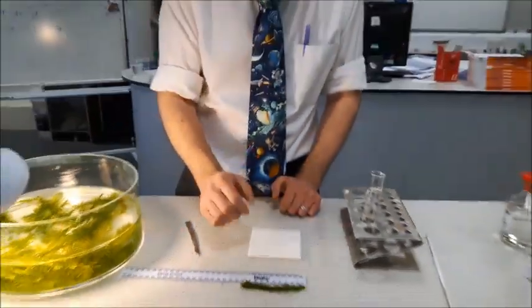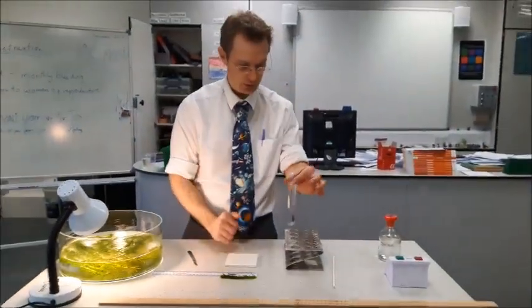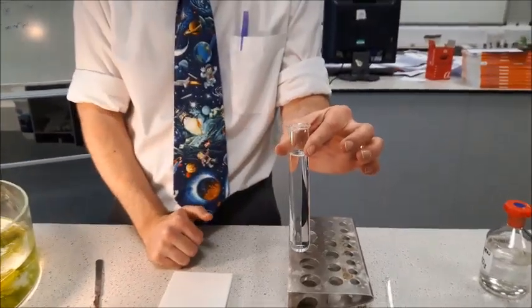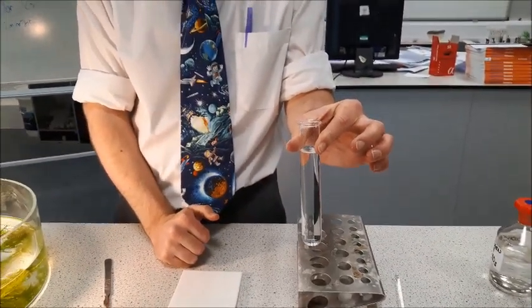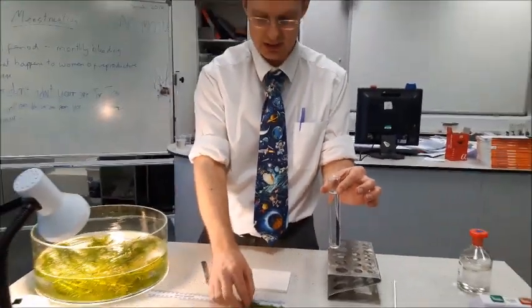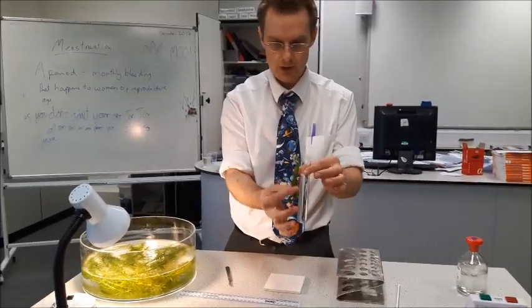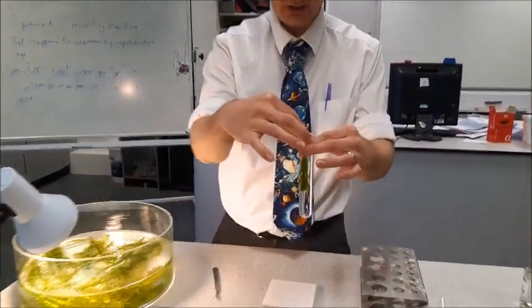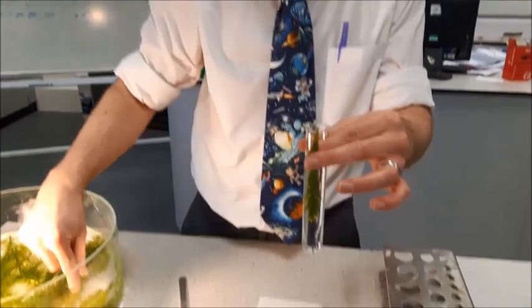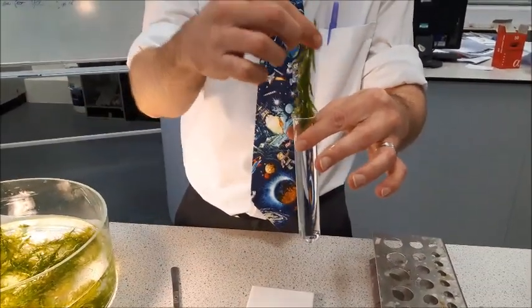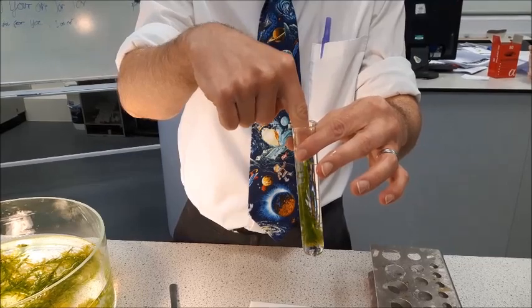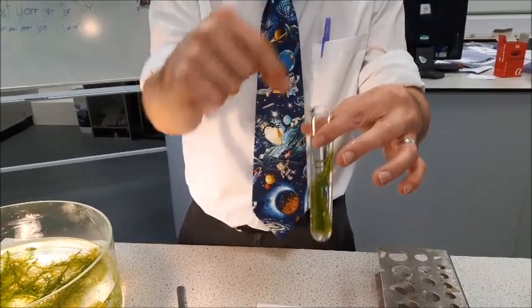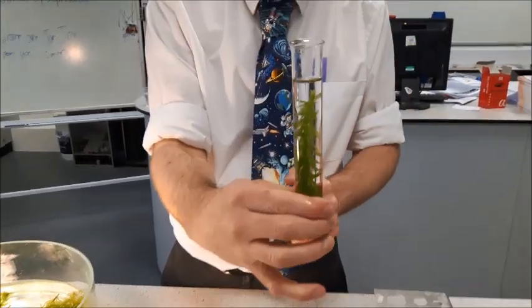Now I've got my 10cm length of plant, I'm going to put it into our hydrogen carbonate solution. This is going to provide some extra carbon dioxide and mean that is not going to be one of the limiting factors in this experiment. I'm going to make sure my plant goes in upside down. I'm just going to clear up a couple of those spare leaves there so I've got a nice point on it. And just in case you have difficulty getting it all the way to the bottom, you can have a glass rod handy to help poke it down, but that's gone in quite nicely.